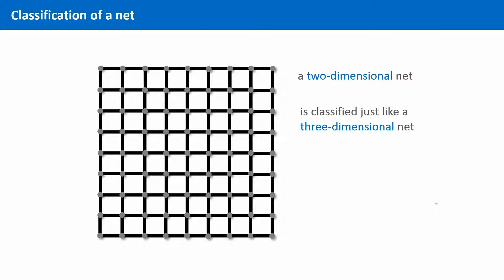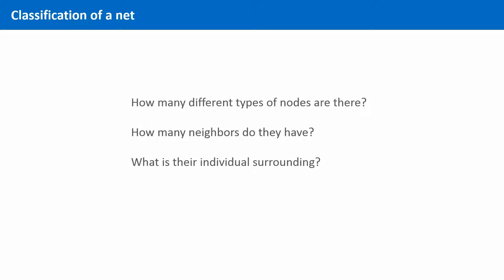With this classification we want to answer the following three questions that concern the nodes, or the vertices as they are often called, of the net. How many different types of nodes are there? How many neighbors do they have? And what is their individual surrounding?